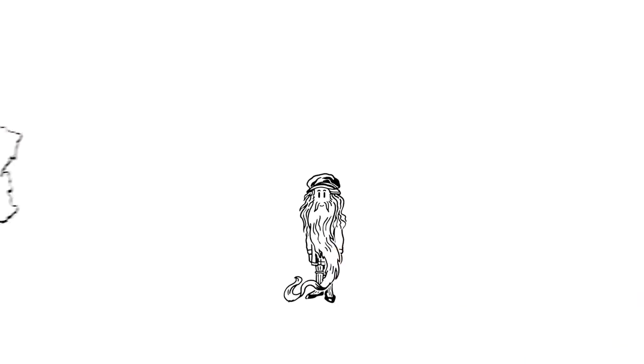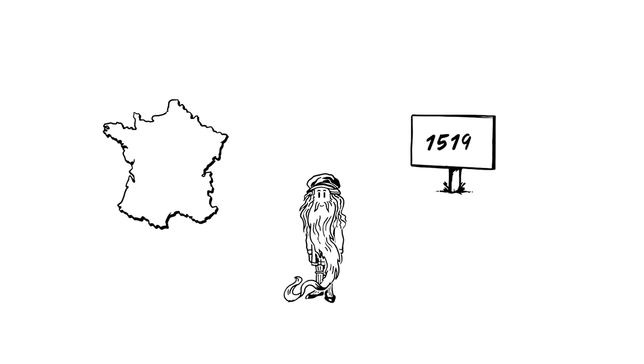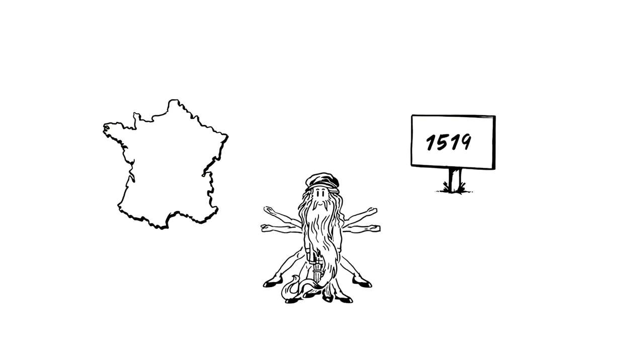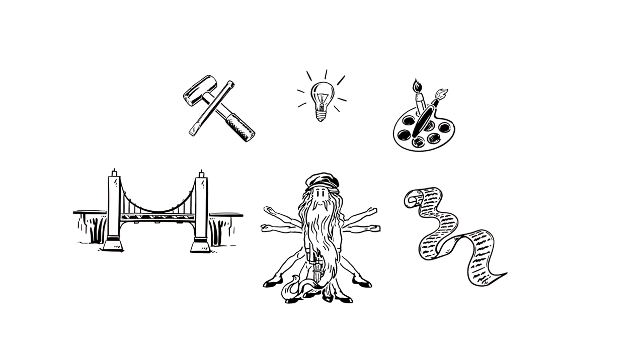He spent his final years in France. By his death in 1519, he had developed a legendary reputation as a Huomo Universale, or Jack of all trades. To this very day, Leonardo da Vinci is widely considered to be one of the most extraordinary people of all time.